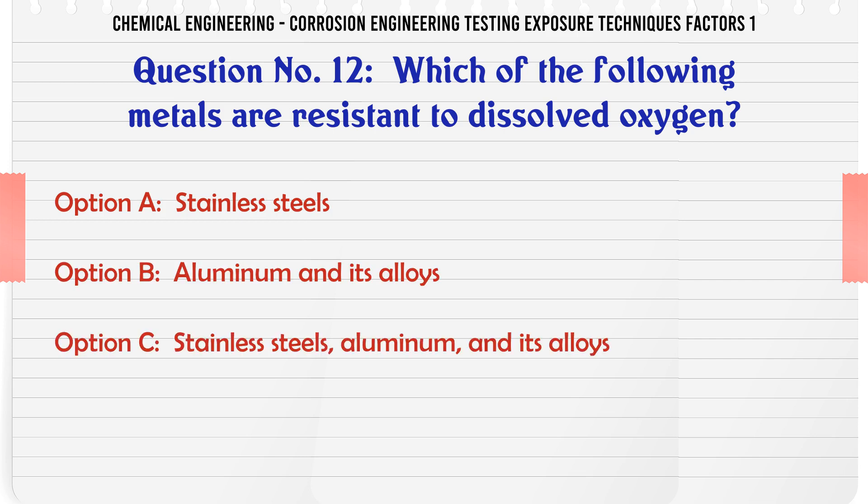Which of the following metals are resistant to dissolved oxygen? A. Stainless steels. B. Aluminum and its alloys. C. Stainless steels and aluminum and its alloys. D. Copper and its alloys.